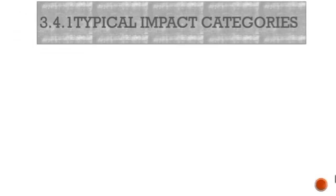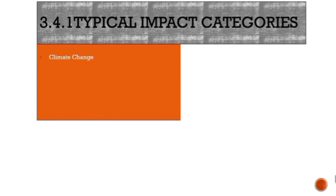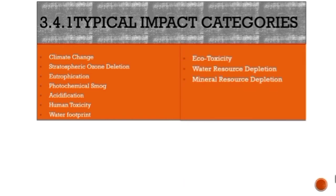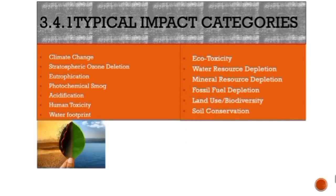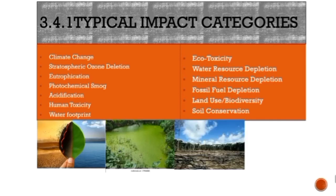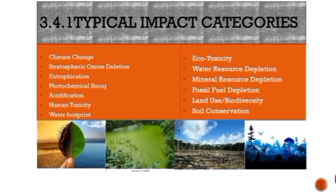Here are the typical impact categories: Climate change, Stratospheric ozone depletion, Eutrophication, Photochemical smog, Acidification, Human toxicity, Water footprint, Ecotoxicity, Water resource depletion, Mineral resource depletion, Fossil fuel depletion, Land use, Biodiversity, and Soil conservation.